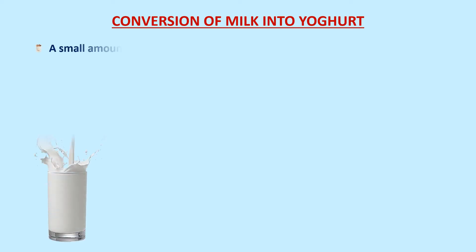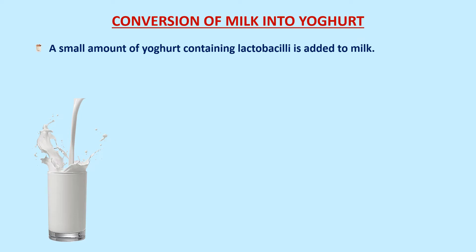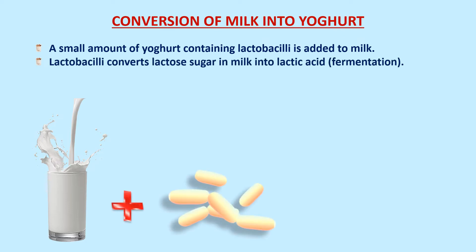The conversion of milk into yogurt — yogurt is curd or dahi. A small amount of yogurt or curd containing lactobacilli is taken and added to milk. The microorganism present in curd or yogurt is called lactobacilli. Lactobacilli converts lactose sugar in milk into lactic acid by the process called fermentation.